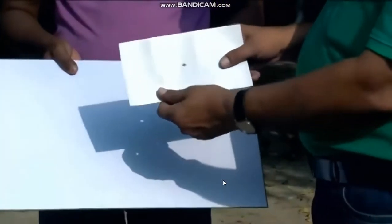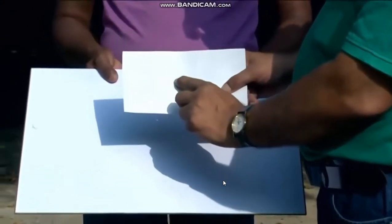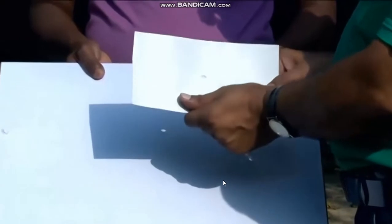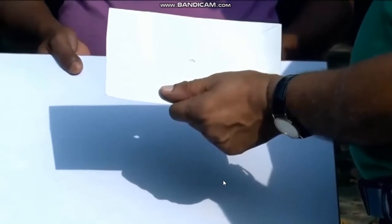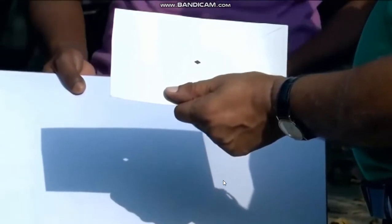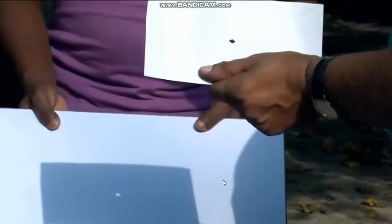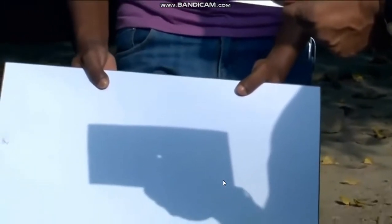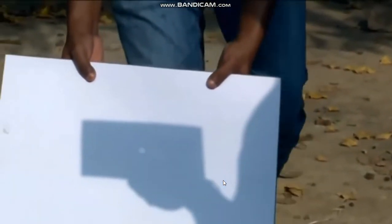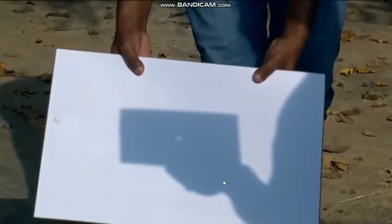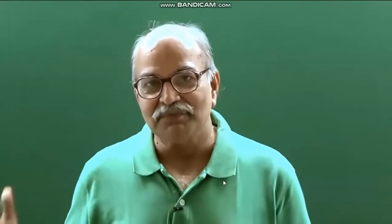Let us change the shape of the opening. This opening is a diamond-type parallelogram, and on the screen you have that diamond-shaped spot. Now Ranjit, take away the screen — increase the distance — and you see you no longer recognize that parallelogram or diamond-type shape. Once again it has become a circular disc. That spot becomes circular once the distance between the screen and the opening is large, independent of the shape of the opening.